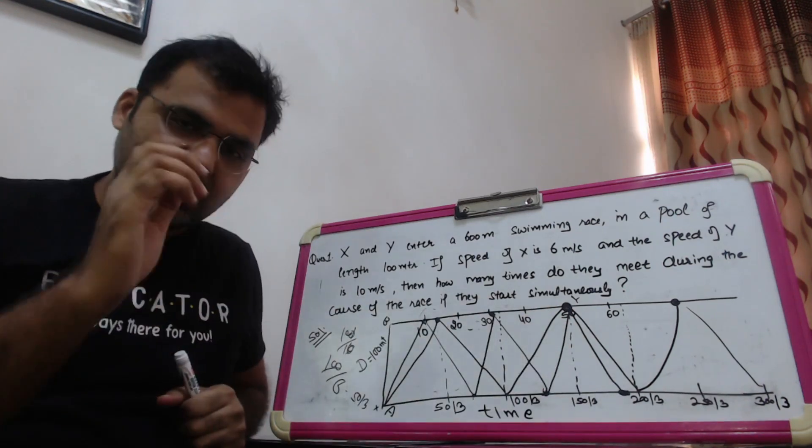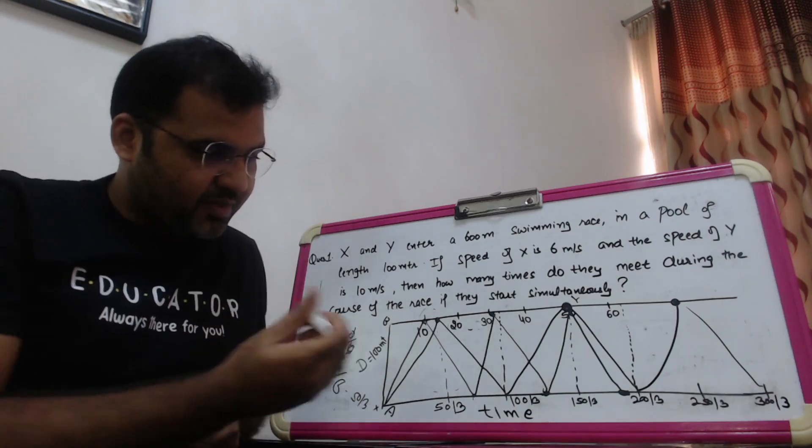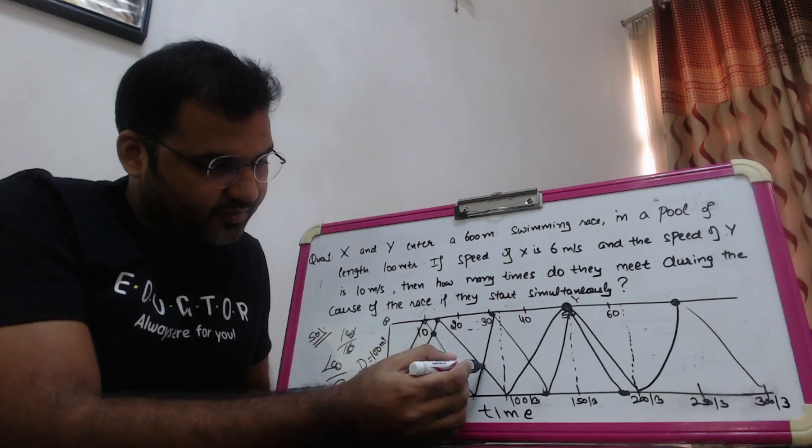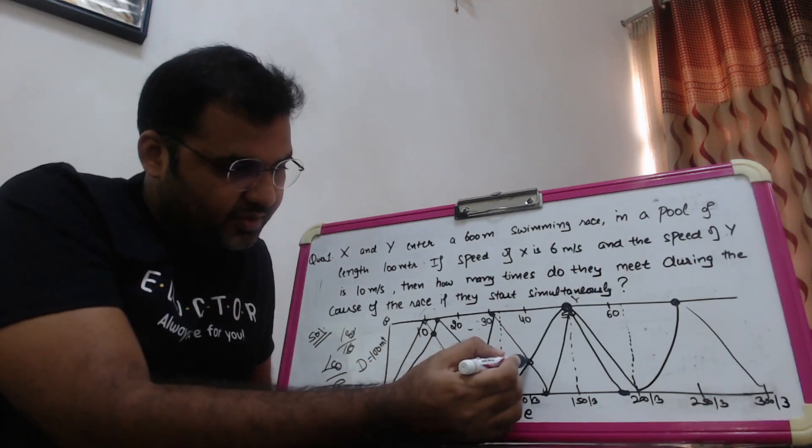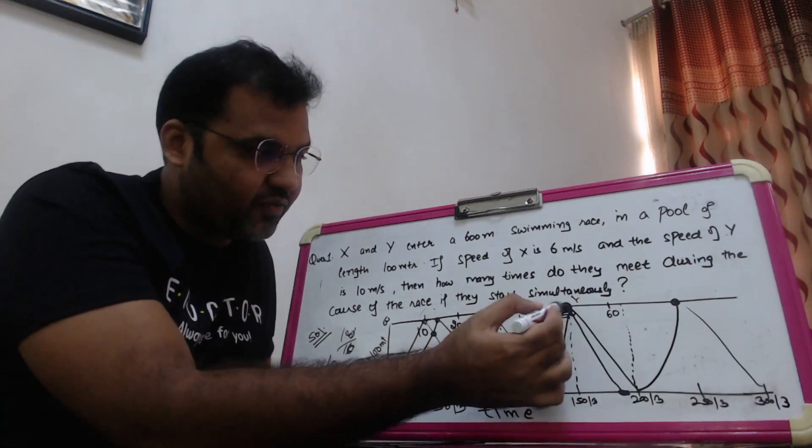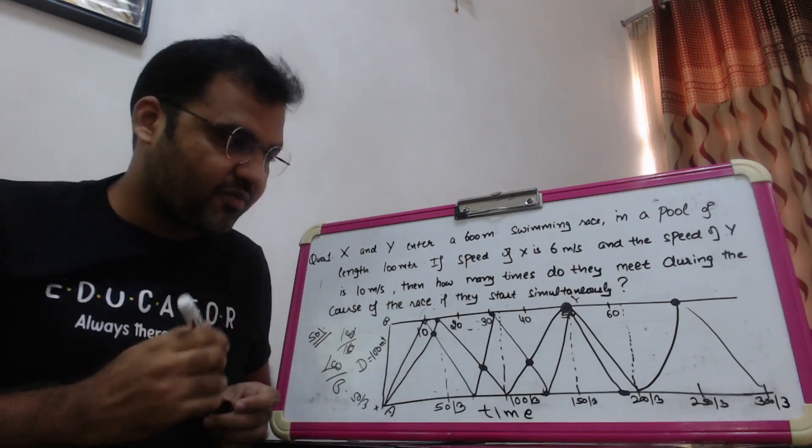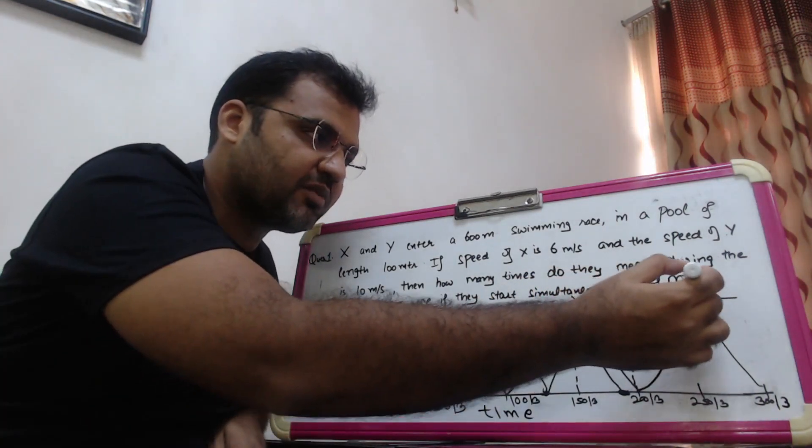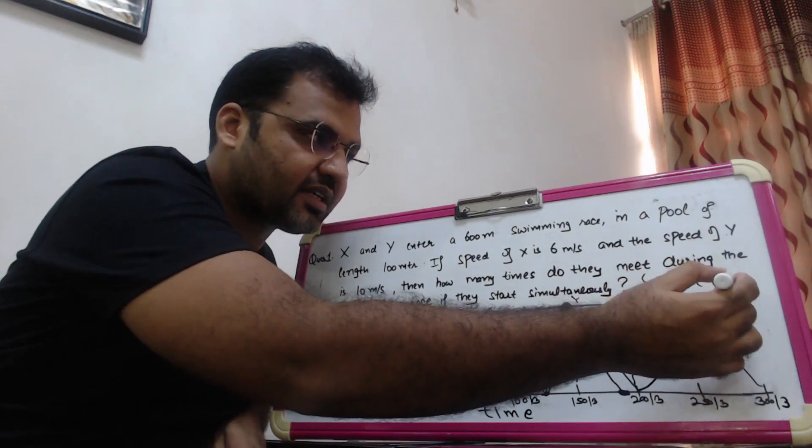If we have to find meeting points, just look at the intersecting points. Your intersecting points of lines X and Y: 1, 2, 3, and 4. That's it. They intersect at only 4 points, so the answer to this question is 4 meeting points. This is the correct answer to the question.